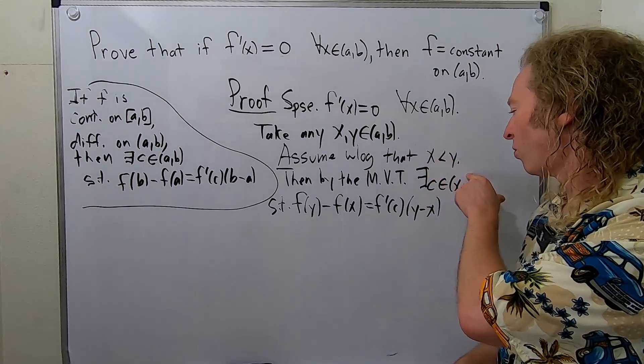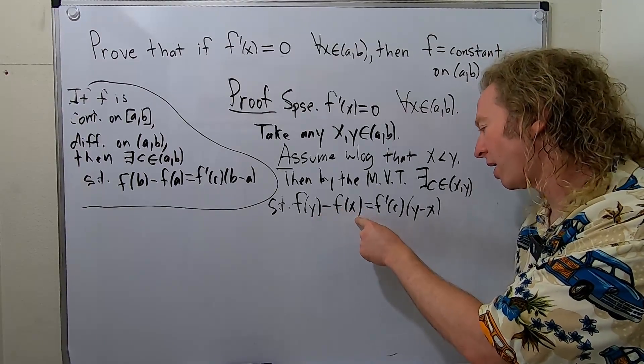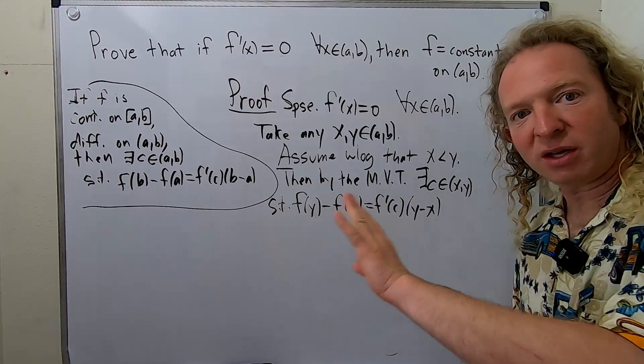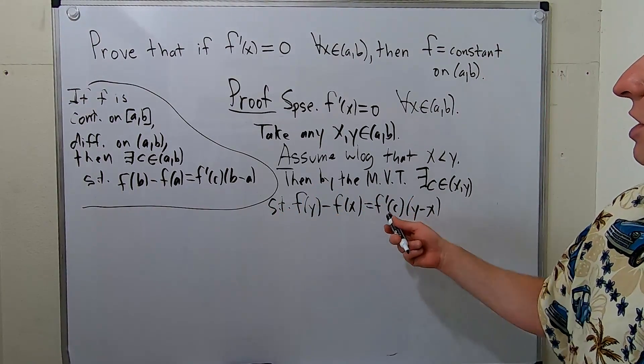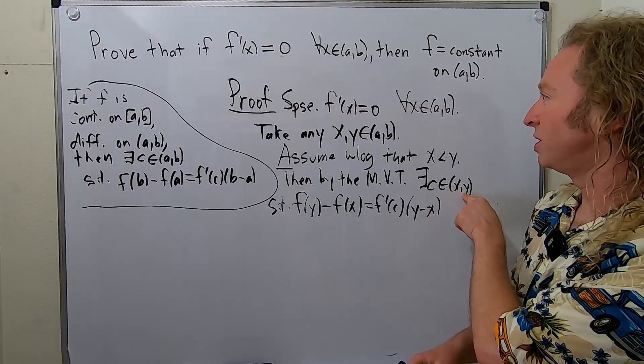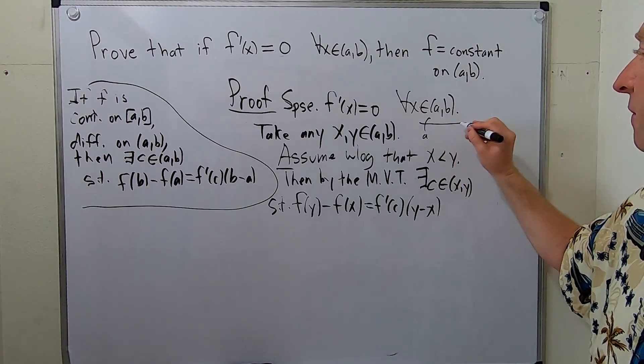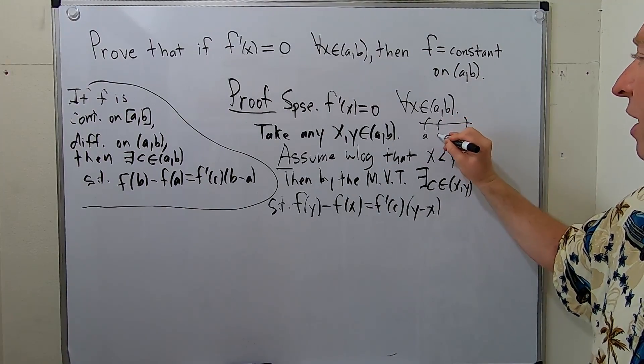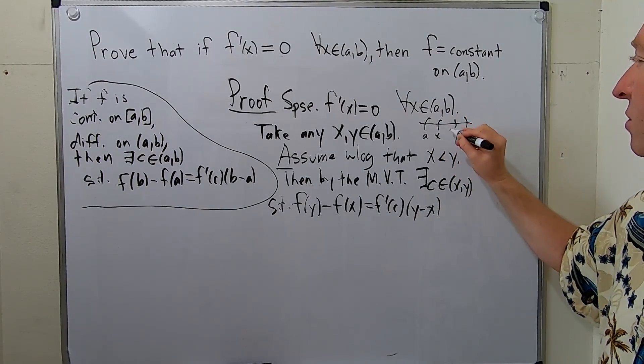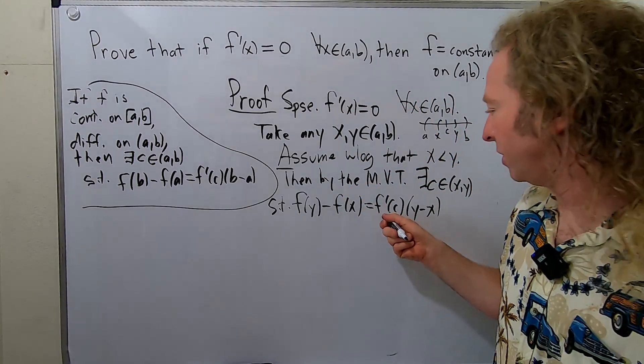So again, if x is bigger than y, then you just look at (y,x). It's very similar, and you get f(x) minus f(y), x minus y. Everything is okay. f'(c) is equal to zero because c is in (x,y), which is a subset of (a,b). This is (a,b), and this is (x,y). So c is here. So because c is in (x,y), it must also be in (a,b). So I think that part is clear.